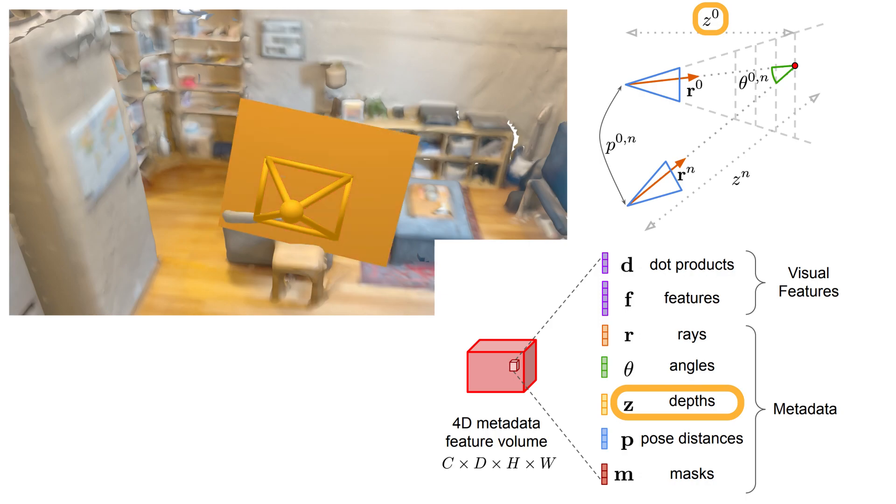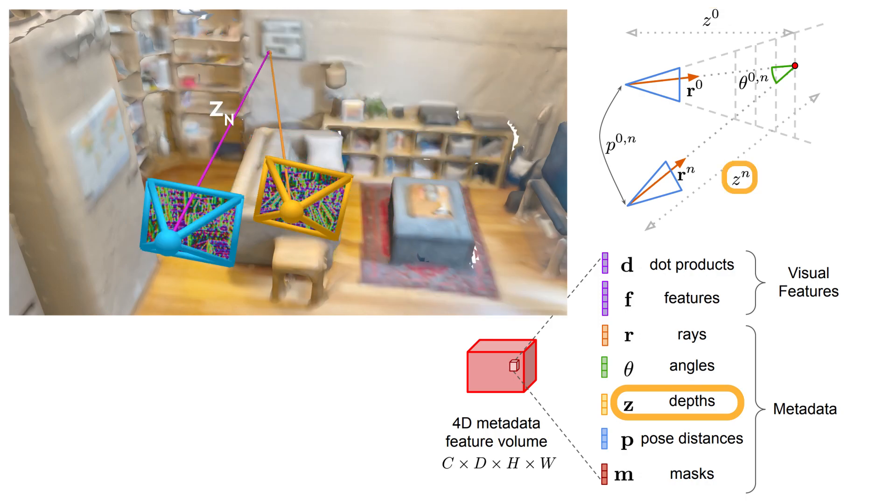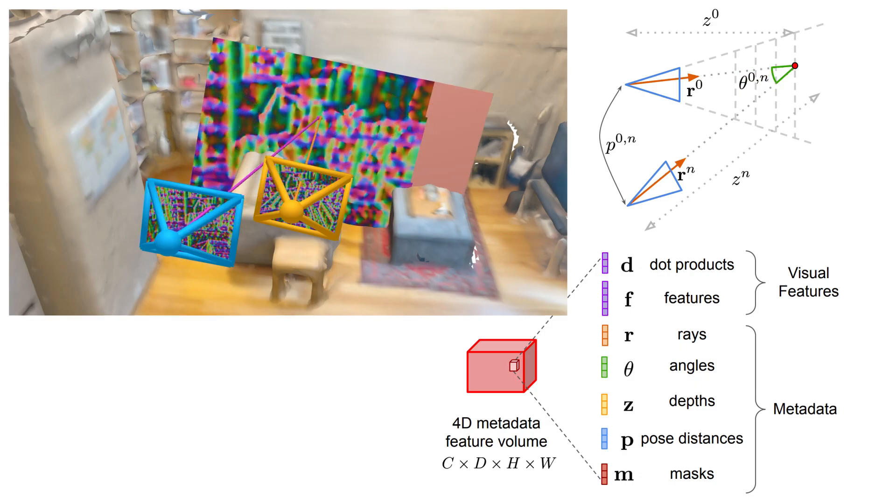The first element of metadata we include is the hypothesis depth plane and the projected depth to each source view. We include the rays from each camera to every location in the volume, along with the angle between these rays. Depth and ray information aid matching, allowing for reasoning on how similar visual features are likely to be depending on the geometric location they explain.